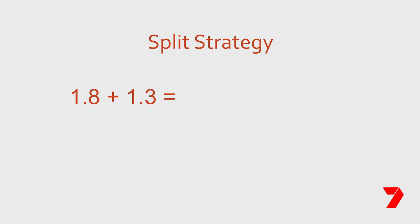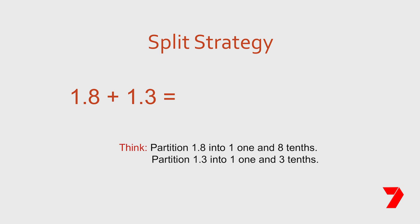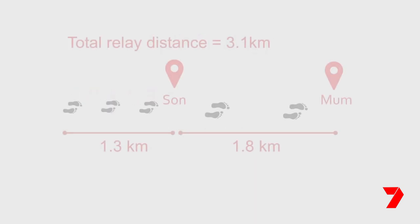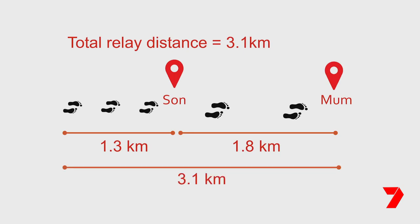Let's go back to my run this morning. I ran 1.8 kilometres and my son ran 1.3 kilometres. If we ran a relay, what distance would we have run? 1.8 kilometres is one whole kilometre and eight tenths. 1.3 kilometres is one whole kilometre and three tenths. Starting with the tenths: eight tenths plus three tenths is eleven tenths, or one whole and one tenth. Adding the whole kilometres gives us two whole kilometres, plus the extra whole from ten tenths, giving us three whole kilometres. Together my son and I could run a relay of three point one kilometres.